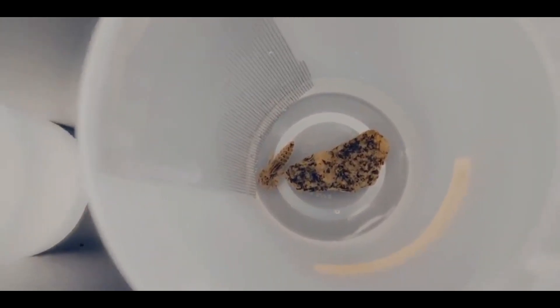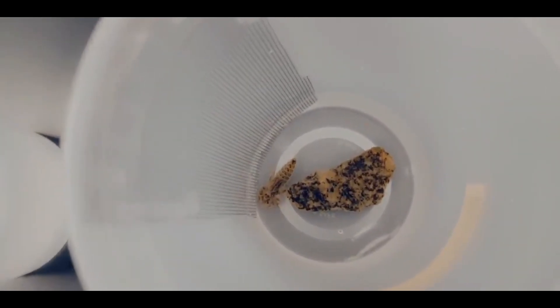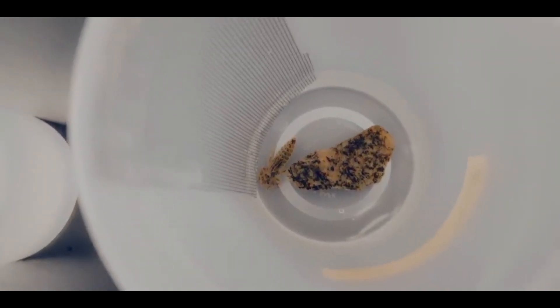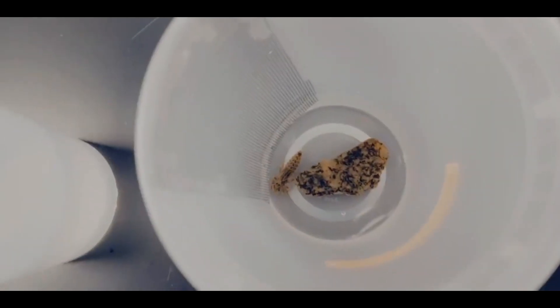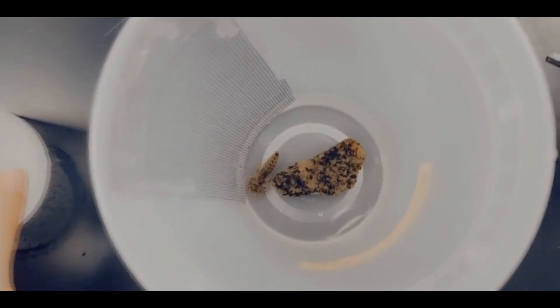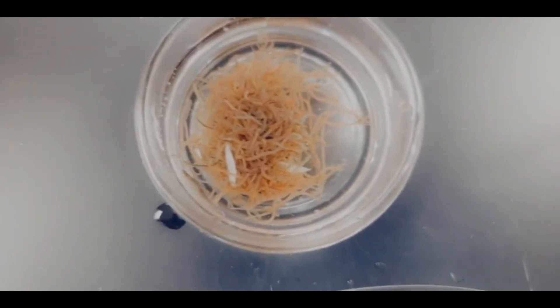And you can feed dragonfly nymphs anything that's smaller than them, that's alive, that they can get their little mouthparts around. So they will eat anything that's alive and moving. But I like to feed my dragonfly nymphs these are called aquatic blackworms.